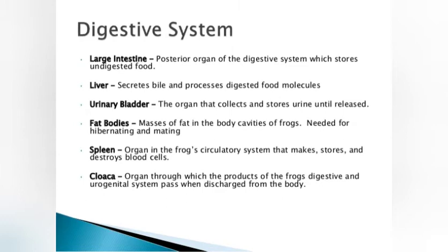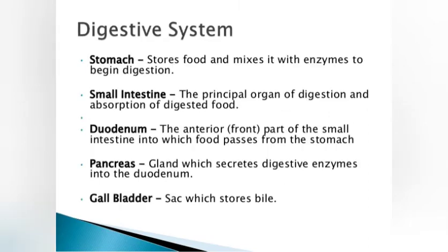Functions of digestive organs: the large intestine is a posterior organ that stores undigested food. The liver secretes bile and processes digested food. The urinary bladder collects and stores urine. Fat bodies are needed for hibernating and mating. The spleen stores and destroys blood cells. The cloaca is where products of digestion and urine pass when discharged from the body.